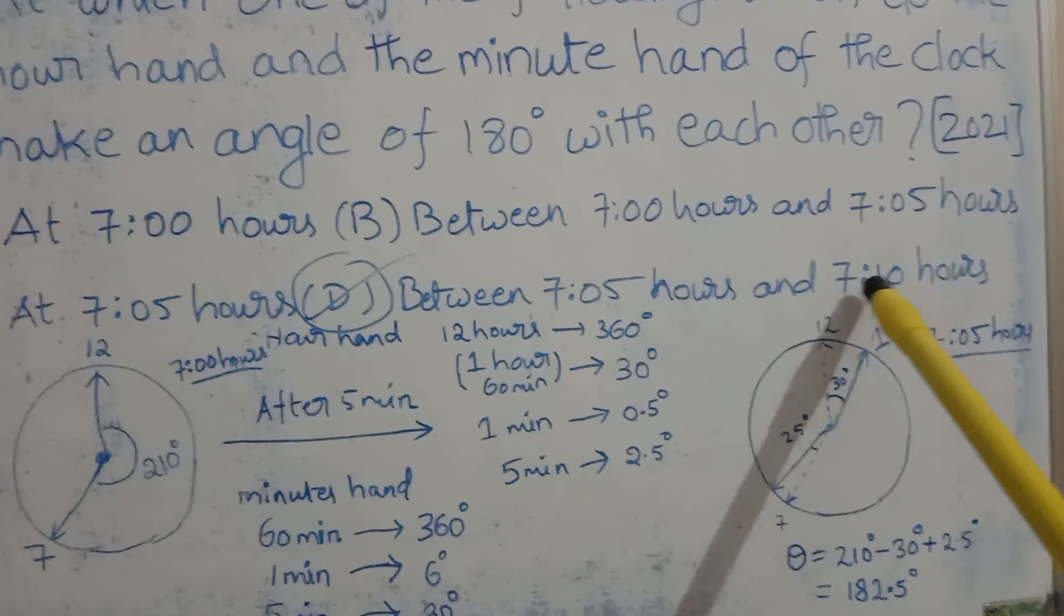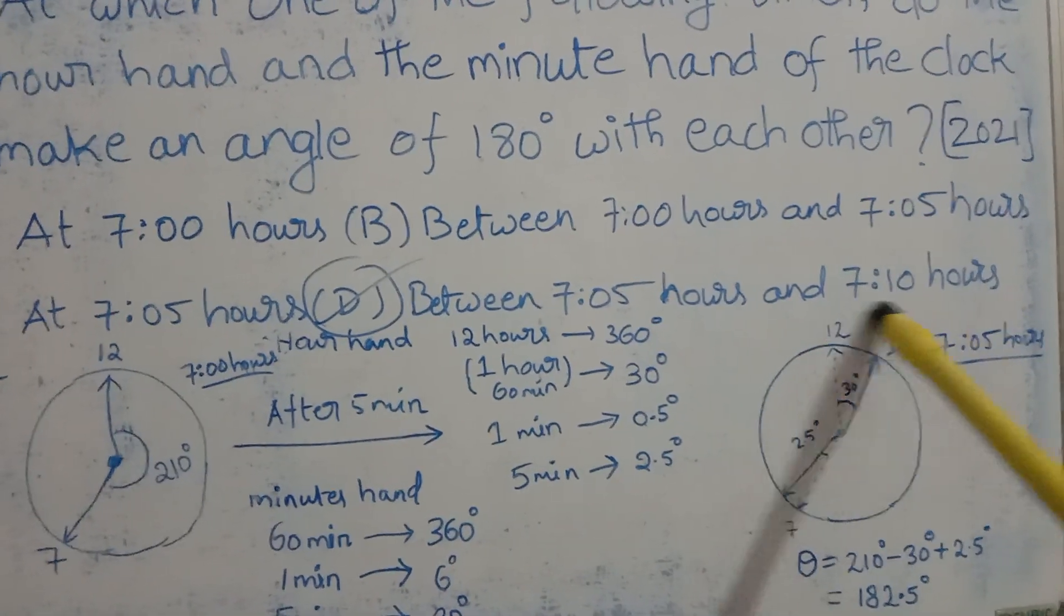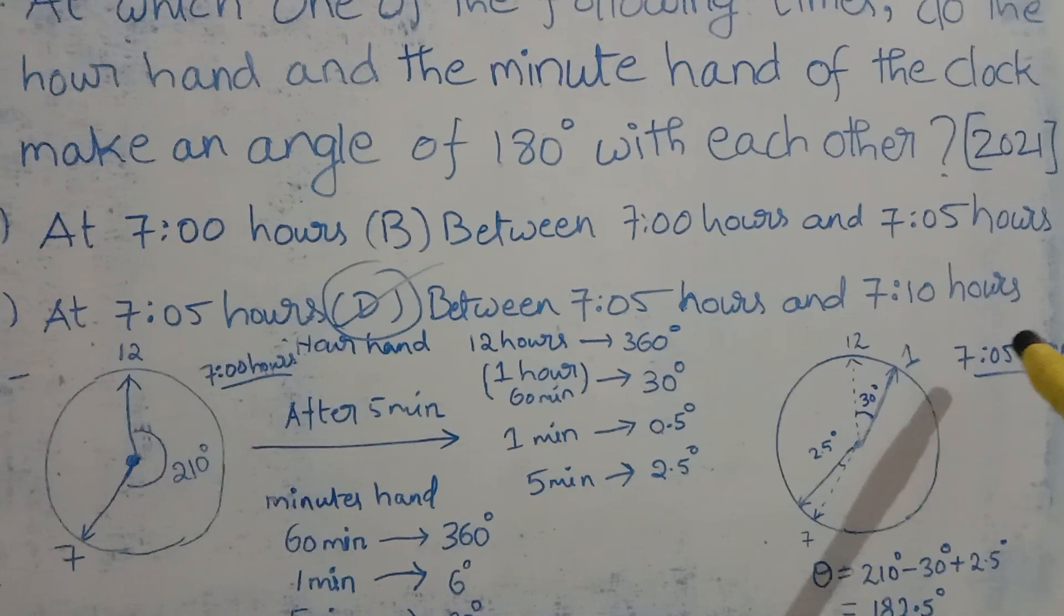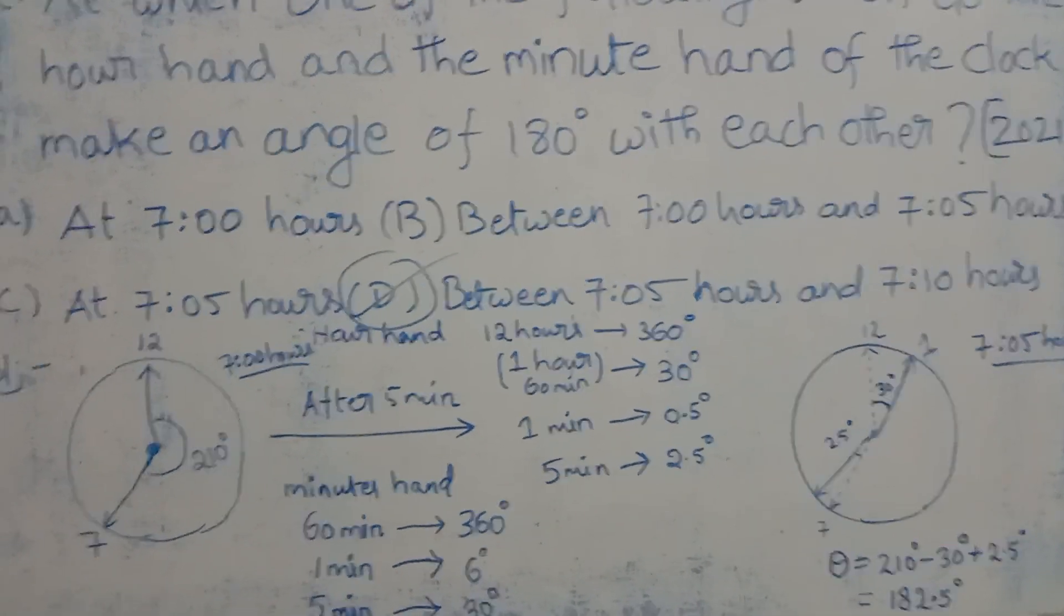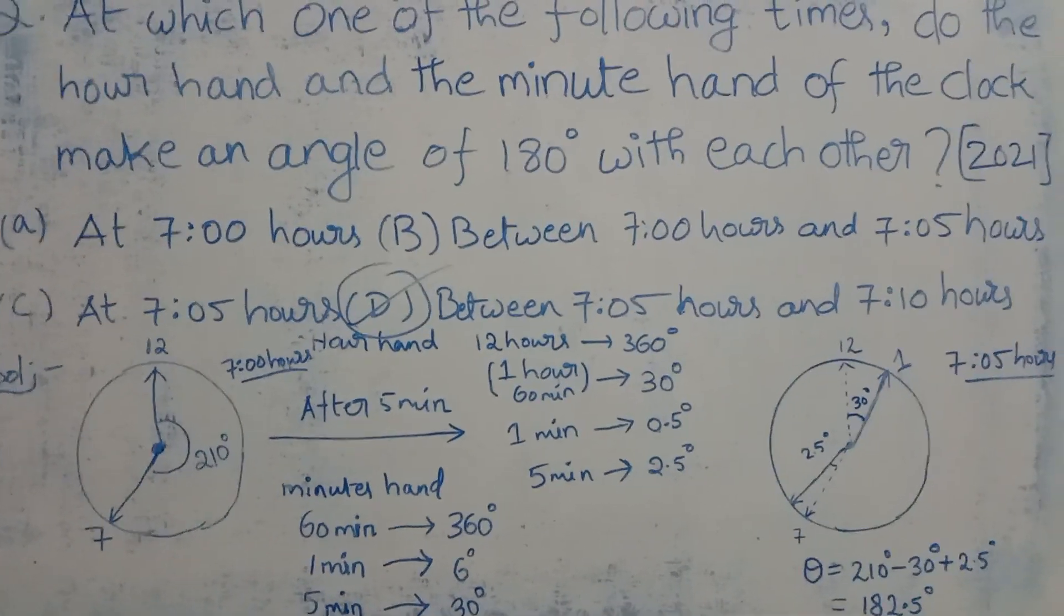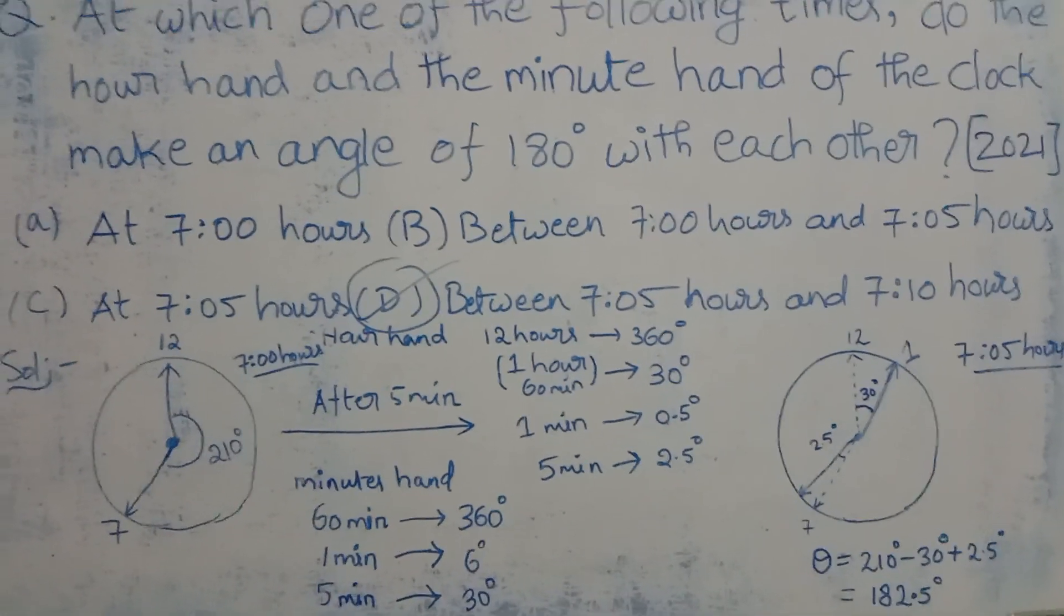If you want, you can calculate what is the angle between the hour hand and the minute hand at 7:10 hours and write it in the comment section. I can check your answer. Thank you.